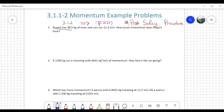So number one, Rupert has 38.5 kilograms of mass and can run 11.3 meters per second. How much momentum does Rupert have? I go through the question and I underline the important facts, and sometimes I will even label them here. So I know this is mass, this is velocity, and this is momentum. So that makes it easier whenever I do step number one of the problem-solving procedure, which is to list out my given variables.